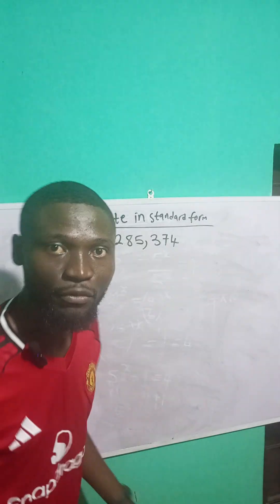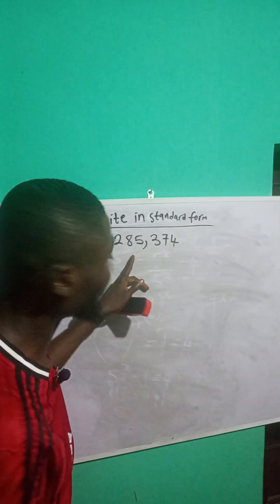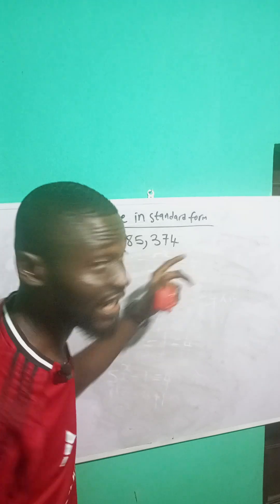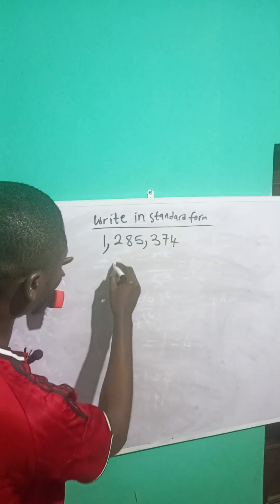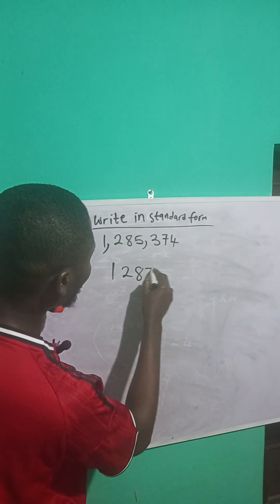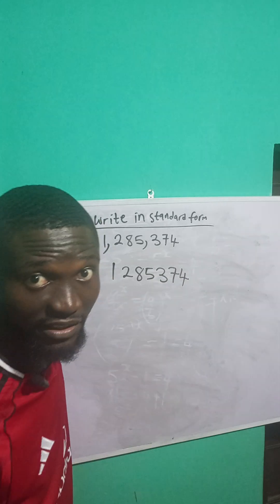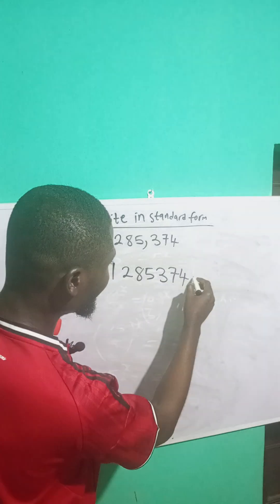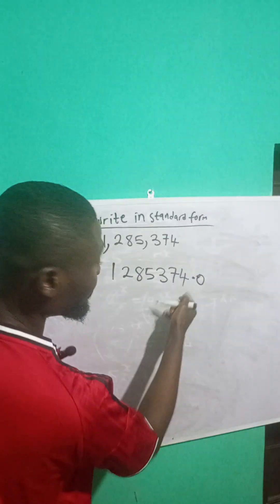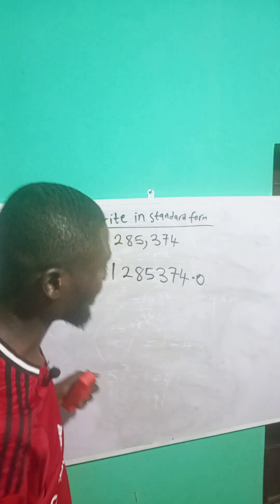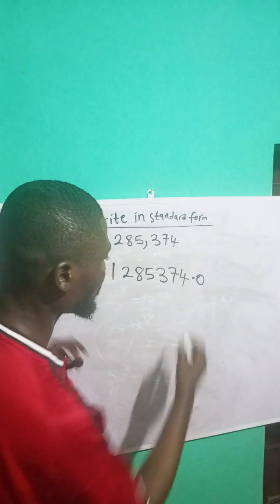Let me write this number in standard form: 1,285,374. If I add a decimal point here and add a zero, it doesn't change anything — it's still the same value. So let me write it in standard form. I'll come to this decimal and shift from the decimal point like this.